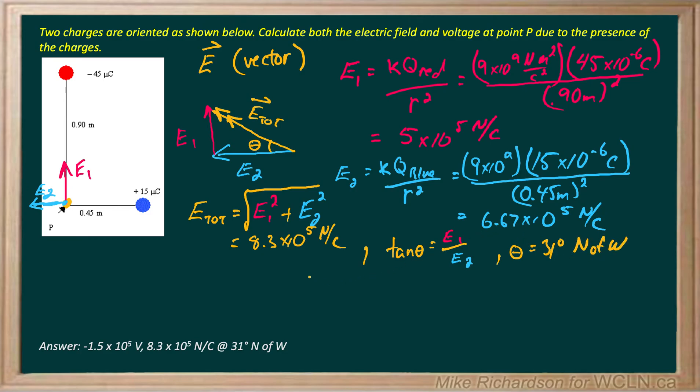So that takes care of our vector part of this question. Now what about the voltage? So the voltage is even simpler. If I want to find the total voltage because it's scalar, all I do is sum up all the individual voltages. I don't have to worry about direction or anything like that, but the thing is with voltage and energy I have to worry about the sign of the charge.